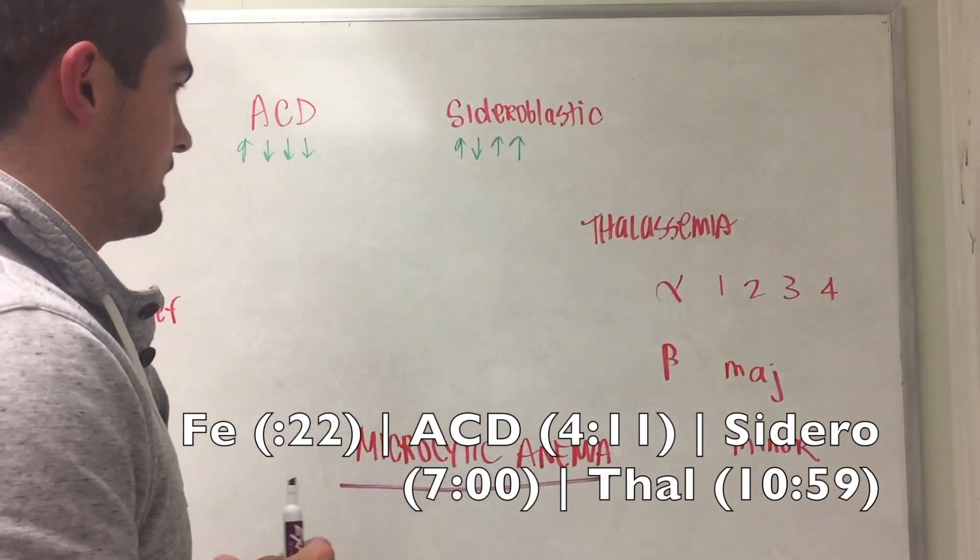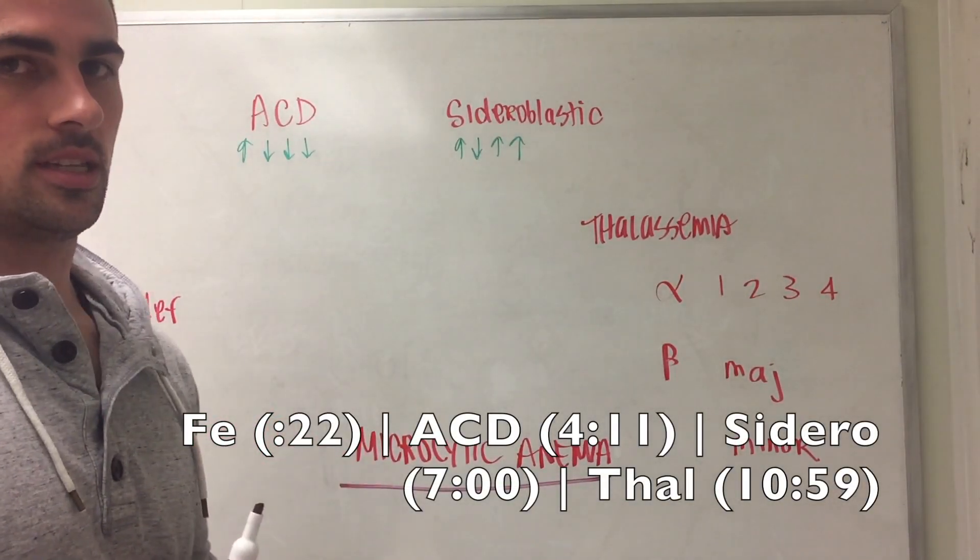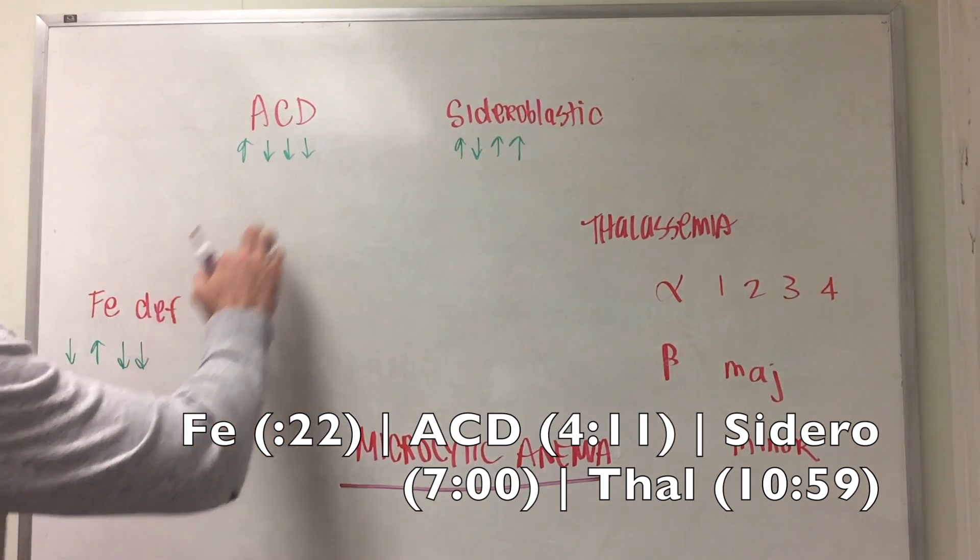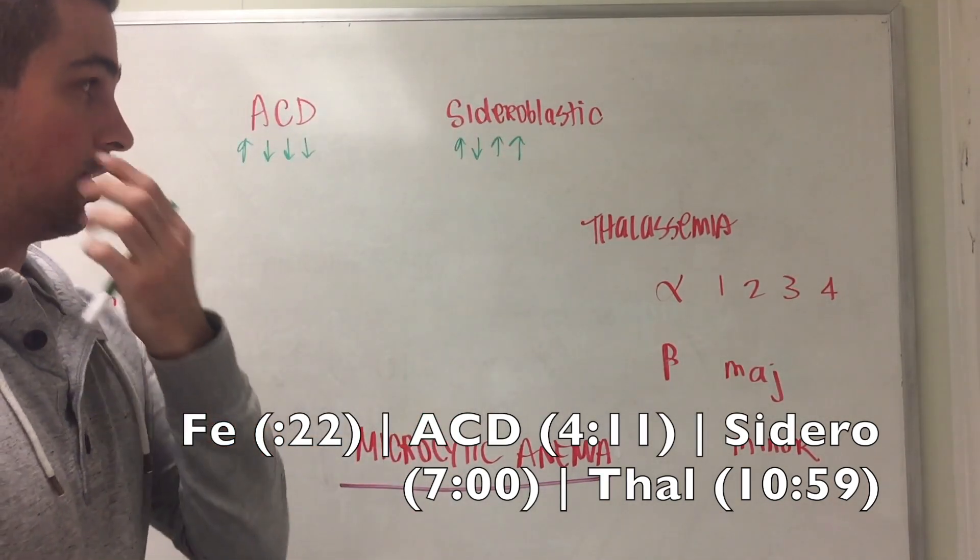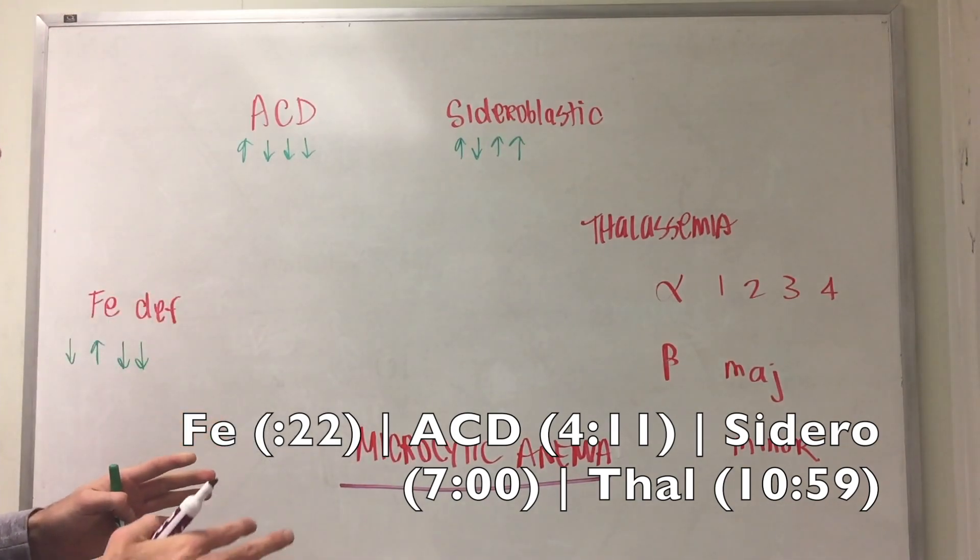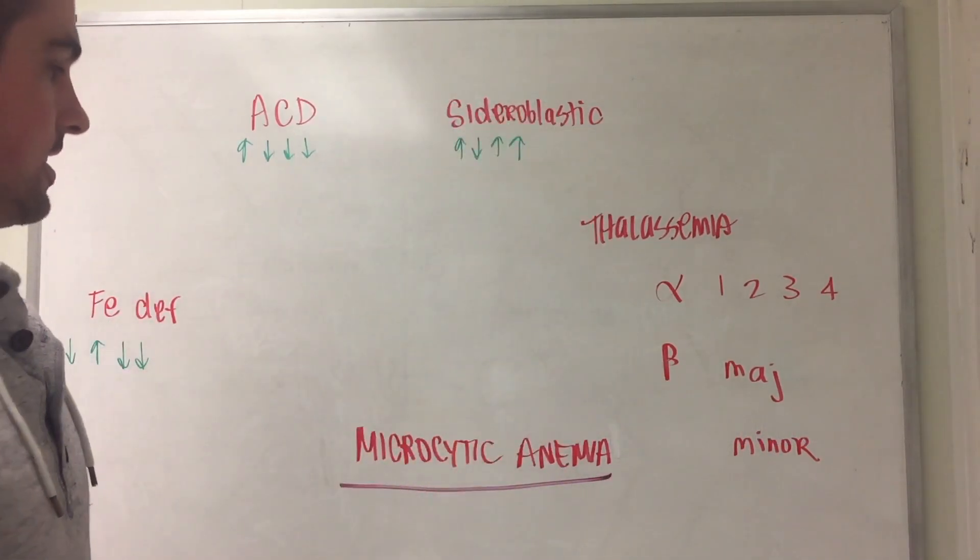I'm going to be talking about microcytic anemias, and the four main ones of interest are iron deficiency, chronic disease, sideroblastic, and thalassemia. Now I'm going to break down what qualifies each one separately.